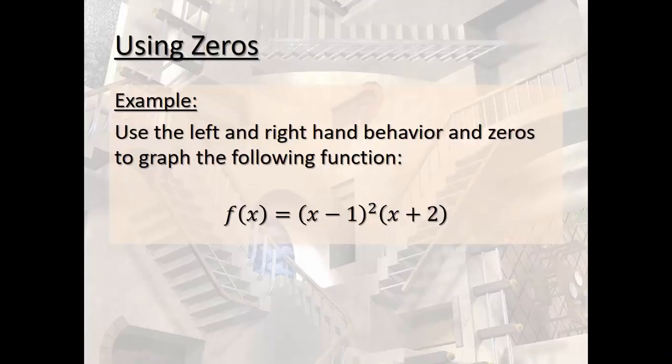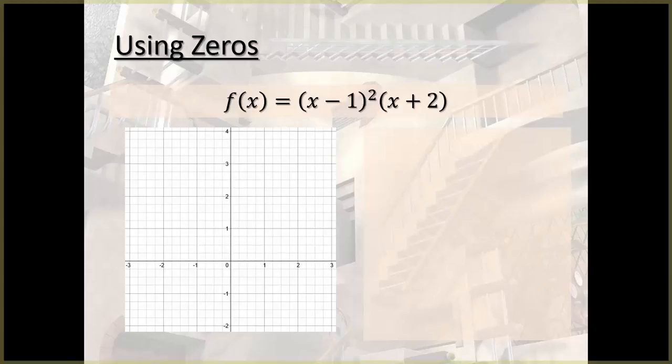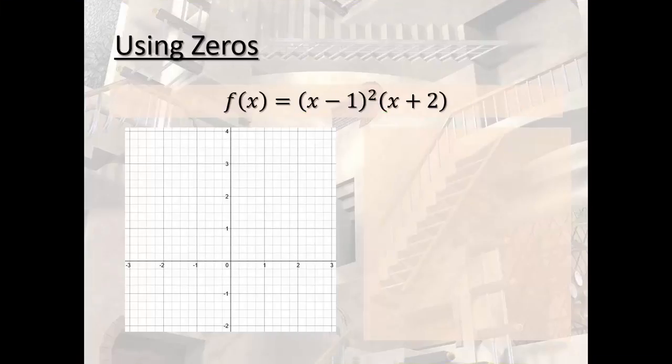Now, the left and right-hand behavior. You have to realize that if you were to distribute this whole thing, you would have an x squared and another x to get x to the 3rd. So you know it is a 3rd degree polynomial. You also know that the coefficients, you have a 1 there and a 1 there, that means our coefficient is going to be a 1.